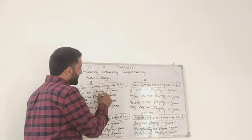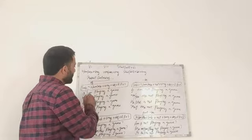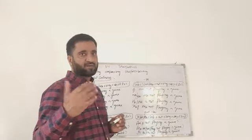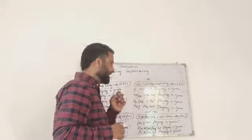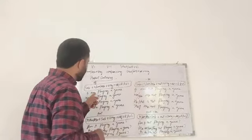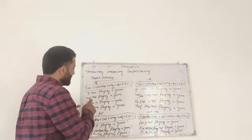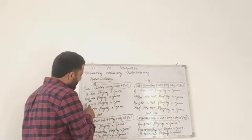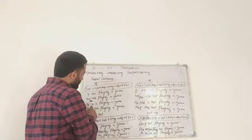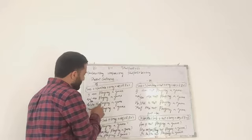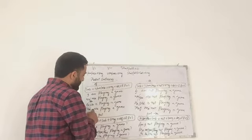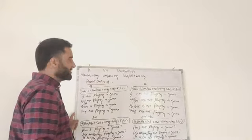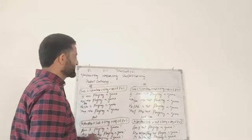I am playing a game. We are playing a game. You are playing a game. He is playing a game. She is playing a game. They are playing a game. These sentences end with a full stop because they are assertive sentences.